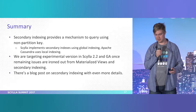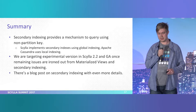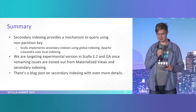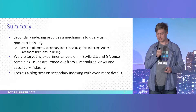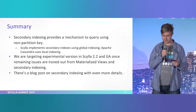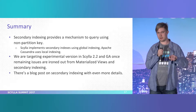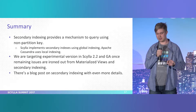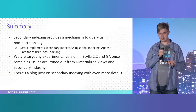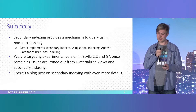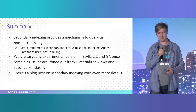As a summary: secondary indexes provide a mechanism to query using a non-partition key, and we use a different approach than Apache Cassandra. We are targeting an experimental version in ScyllaDB 2.2, and then GA once all the issues are fixed. This feature depends on the GA of materialized views, which is also in the future.